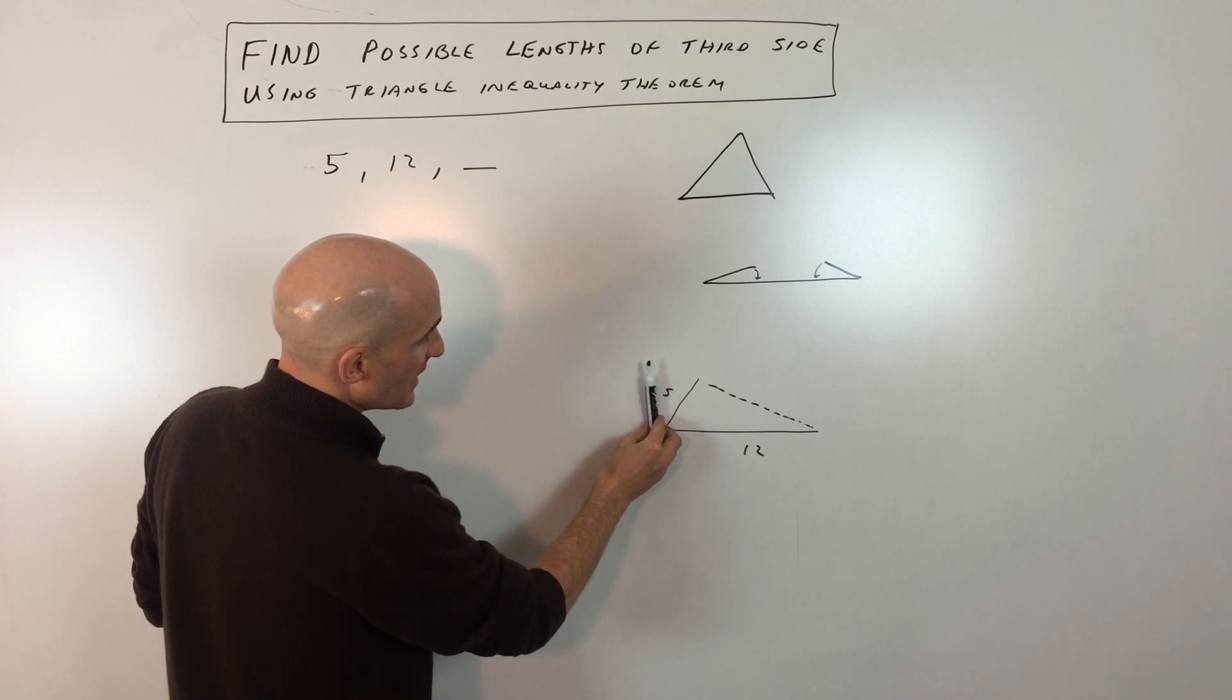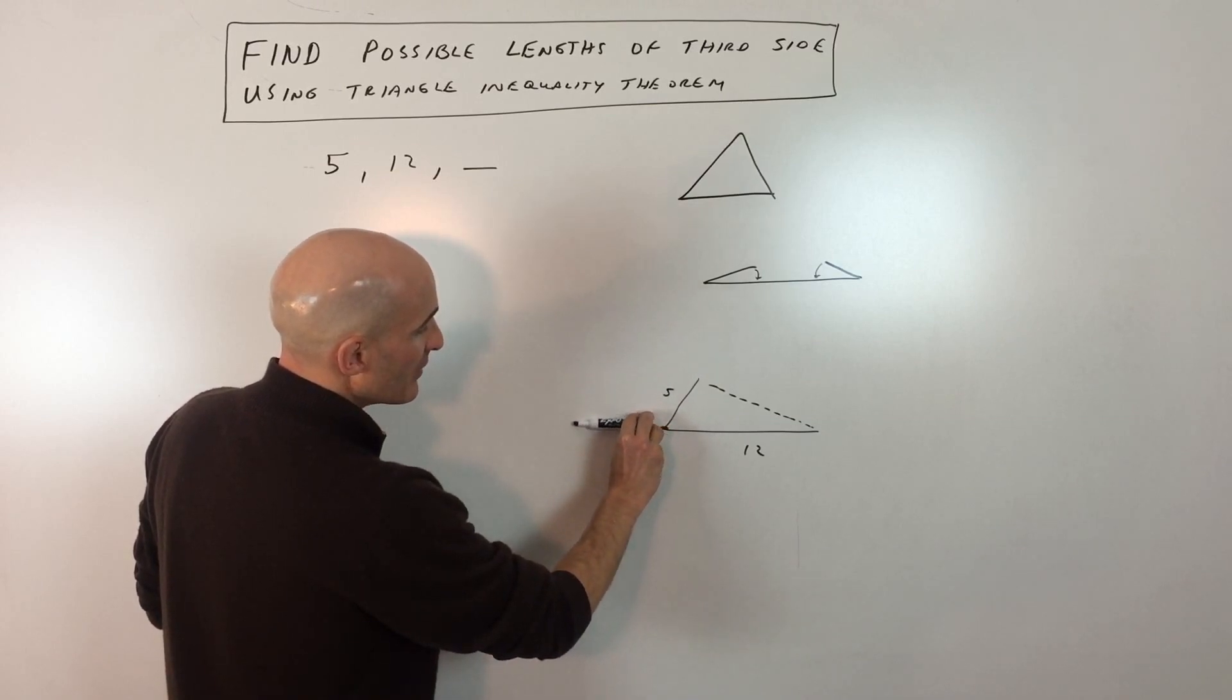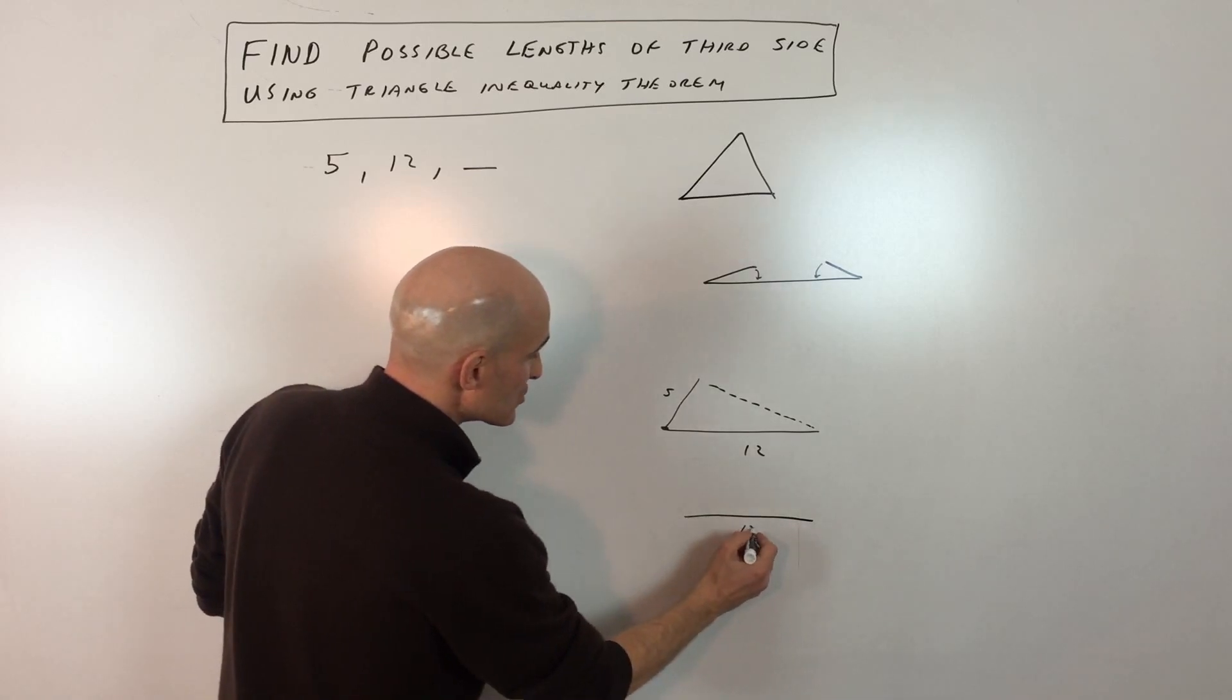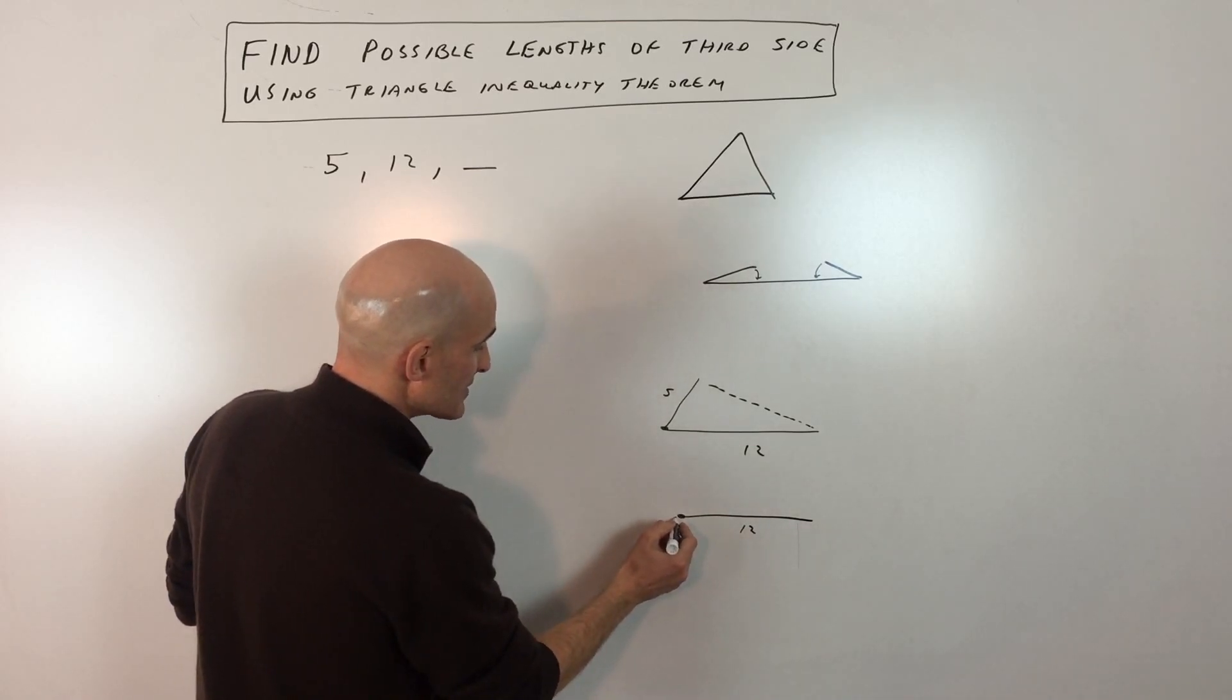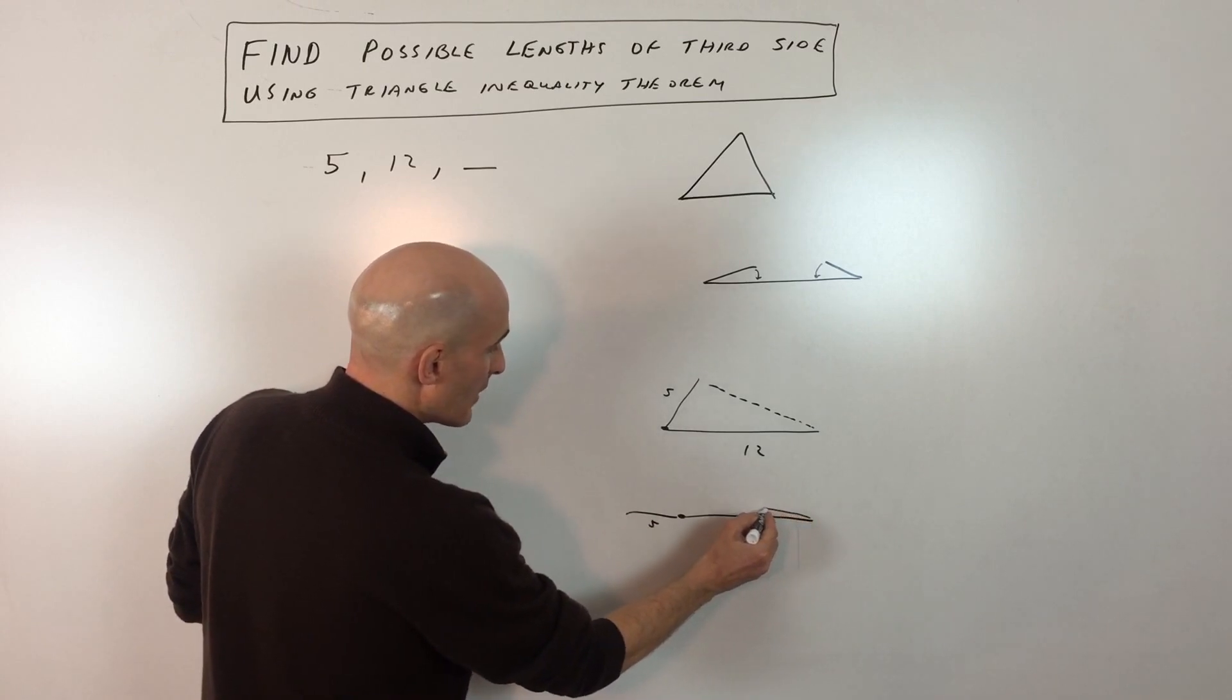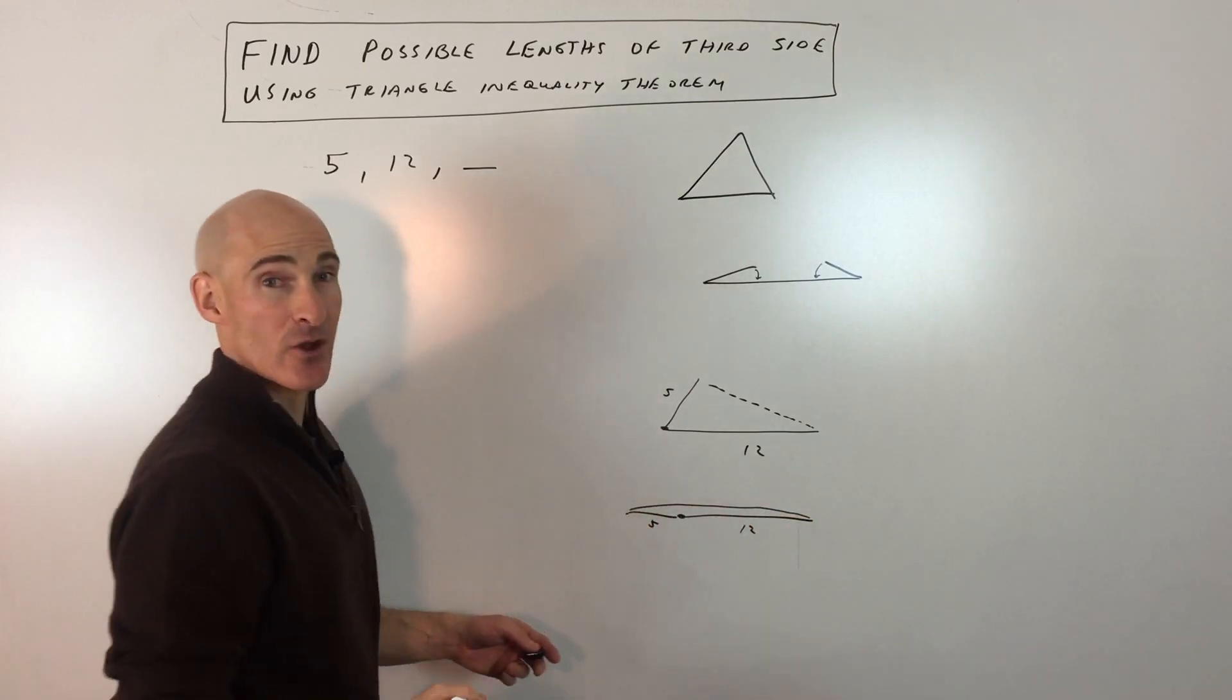So if we take this and we rotate it, like this, the most extreme situation would be kind of like this, where this is 12, and this is like 5 right here, and then the third side would have to span that distance like so.